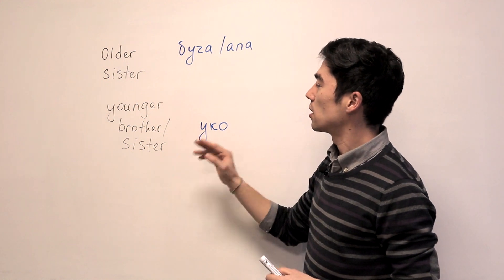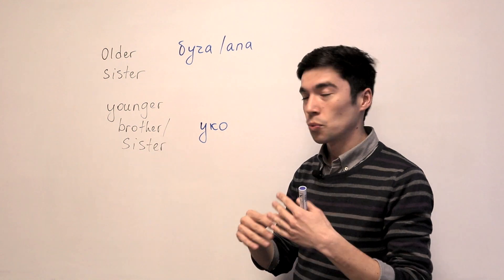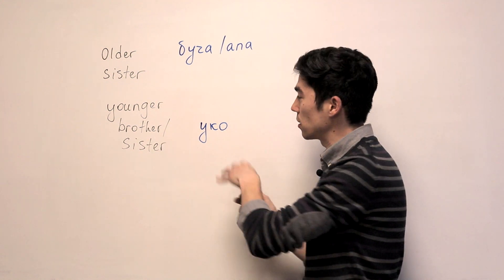And younger brother and sister, we say Uko. Uko doesn't matter, brother or sister. We use this word Uko both. This is also informal.